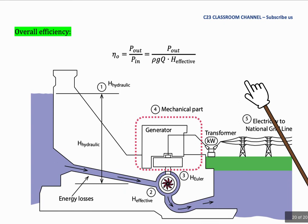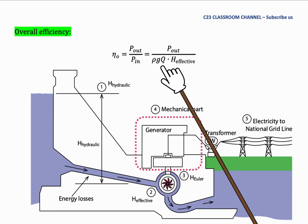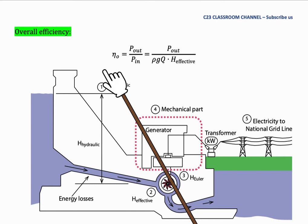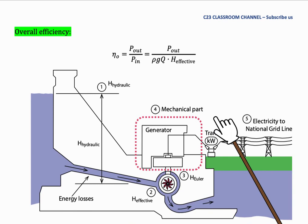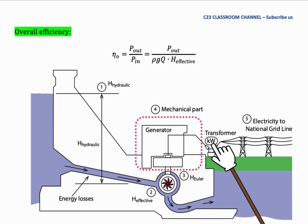Overall efficiency can be defined as power out divided by ρgq × H_effective. Overall efficiency is the efficiency of the overall system of the Francis turbine. The power out is the power that we get at the transformer, and the input power is from H_effective.